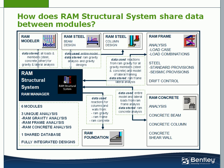In the RAM Structural System, we have six unique modules and three unique analyses, which are specialized to capture the issues that are significant to the particular material and types of members being analyzed and designed. All of the modules of the RAM Structural System are fully integrated by sharing information to produce a complete building design.